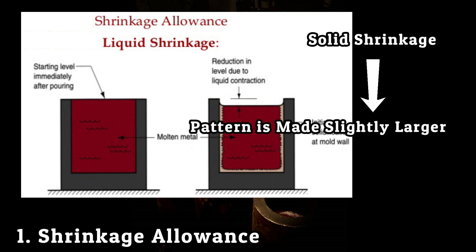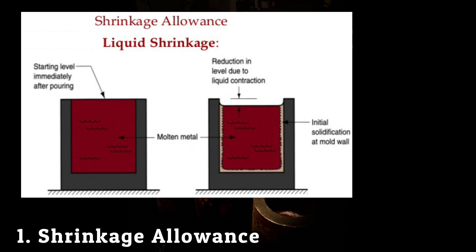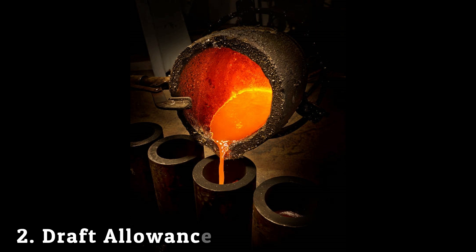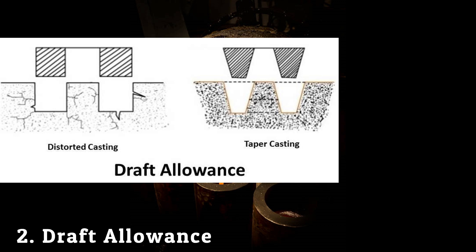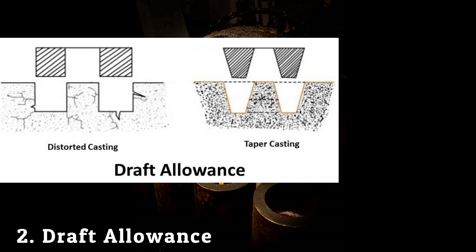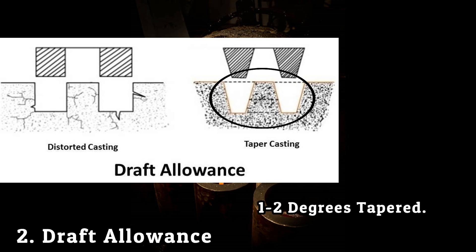Next is draft allowance. When the pattern is removed from the mold, the parallel surfaces in the direction at which the pattern is withdrawn are slightly damaged and convert into slightly tapered surfaces. To compensate these changes, these parallel surfaces on patterns are made slightly tapered — around one to two degrees.